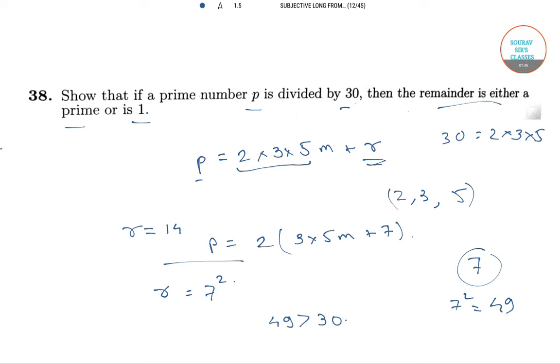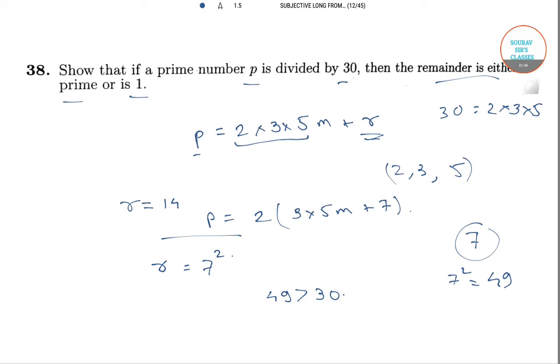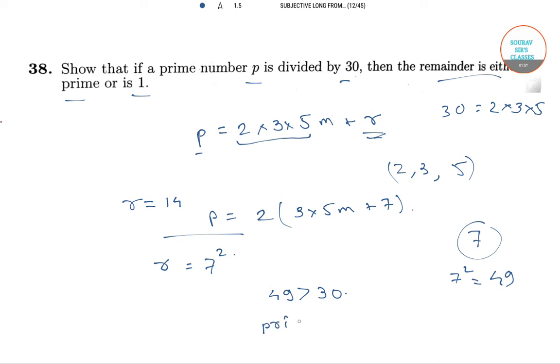So, R cannot be greater than 30, that is 49. So, R is either a prime or 1.